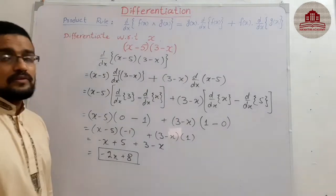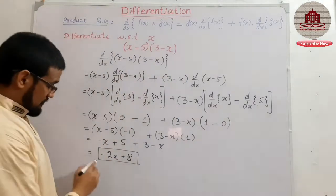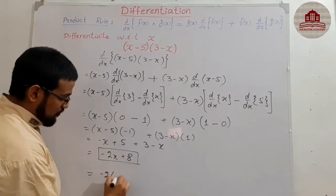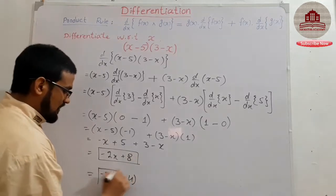Okay students, this is the derivative of this. And you can also write in form -2 take common, x - 1, x - 4. Both answers are correct.